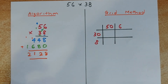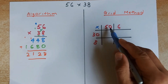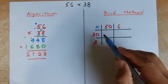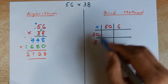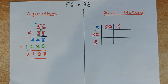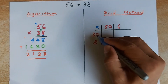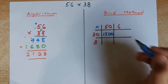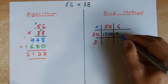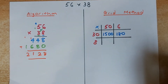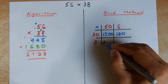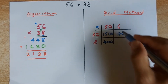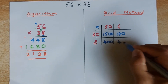Okay, now the grid method — similar, you multiply them again. 56 is made up of 50 and 6, and 38 is 30 plus 8. So you put them in a grid like that. Now you are going to multiply them together. 50 times 30 is going to be 1,500. 6 times 30 is 180. 50 times 8 is 400. And 6 times 8 is 48.